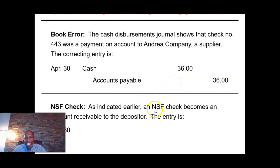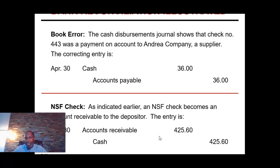The NSF check means that a client wrote us a check but that check did not clear, meaning that client still owes us money. So we're going to put that back on the books by debiting accounts receivable for $425.60, and because the check didn't clear, we decrease our cash account by $425.60. If you're adding an item, debit the cash account; if it's a subtraction, credit your cash account, then figure out what other account is involved in that transaction.